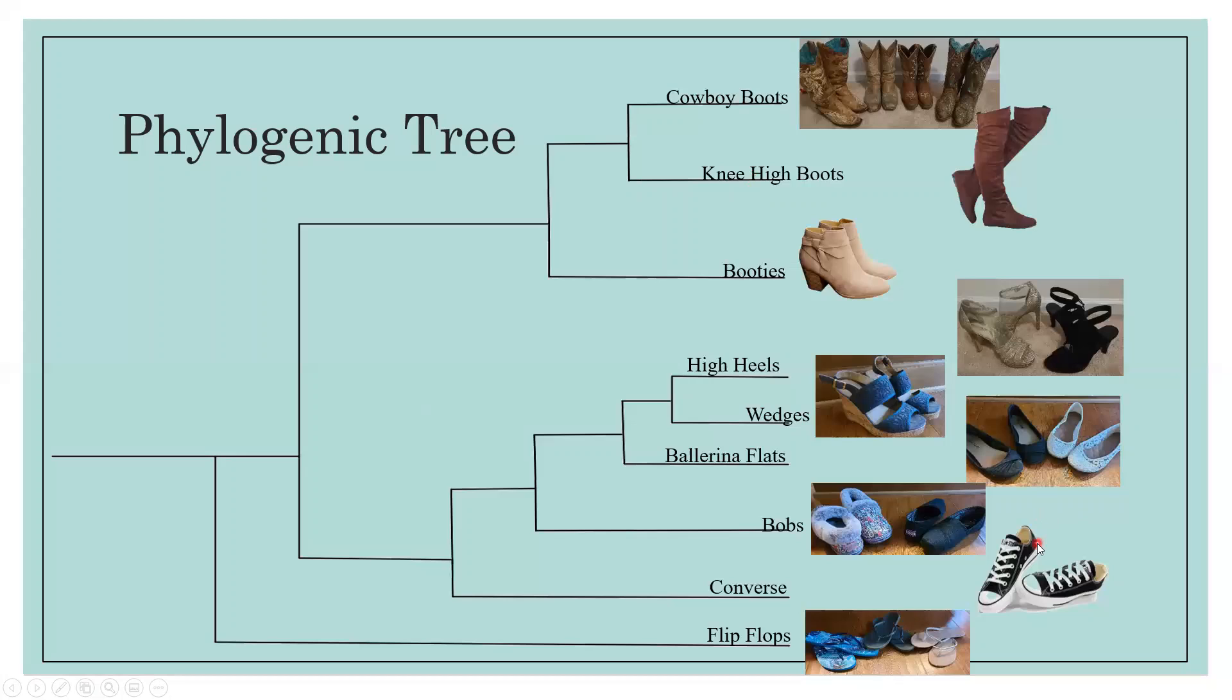So next would be OTUs, which are operational taxonomic units, which is the degree at which we base phylogenetic trees off of. The differences in the DNA organism, this is what gives the length of the branch that we see. So the shorter the branch, the closer the related organism is because they have less variation in the DNA.